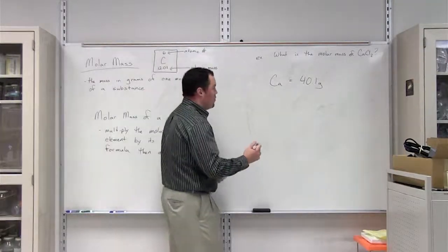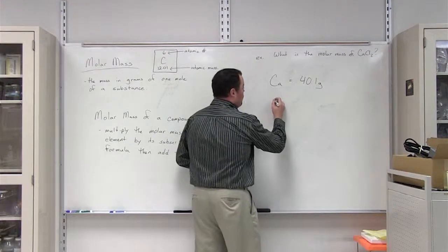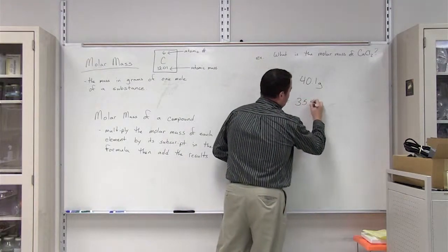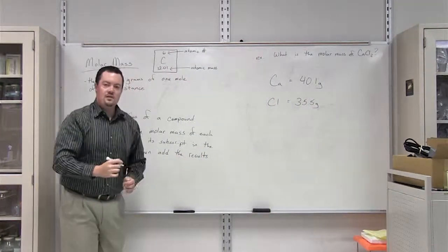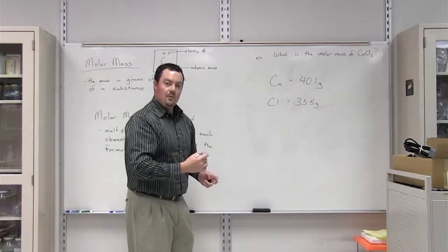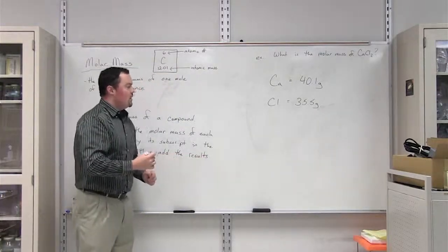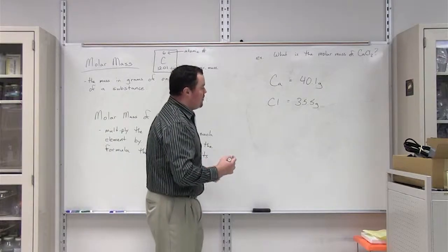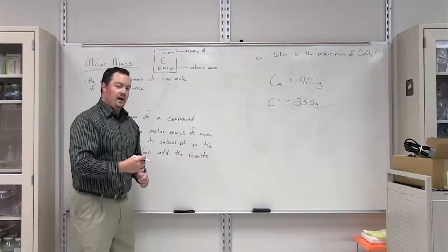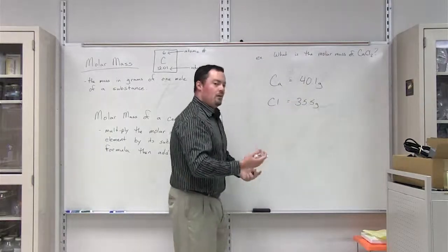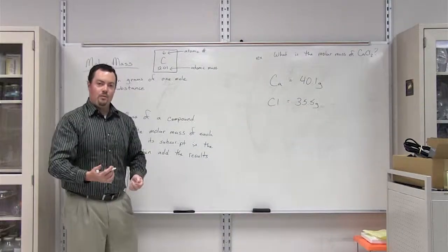Next up, we need to determine the molar mass of chlorine. The molar mass of chlorine is 35.5 grams. It comes straight from the periodic table as well. The second step, once you determine the molar mass of each element present in your compound, is to multiply each molar mass value by the number of that particular element that's present in the compound.